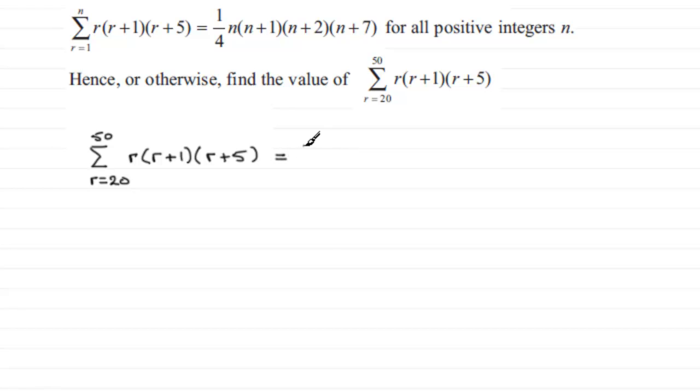To get around this problem, this is exactly the same as summing from r going from 1 to 50 of r multiplied by r plus 1 multiplied by r plus 5.